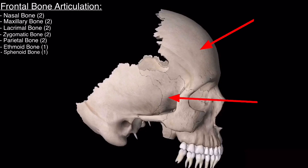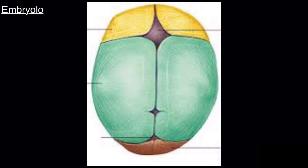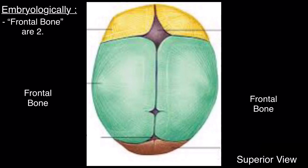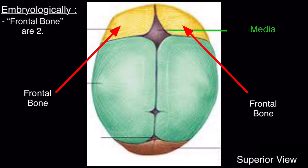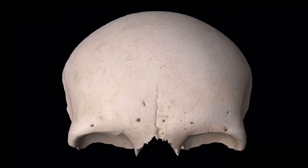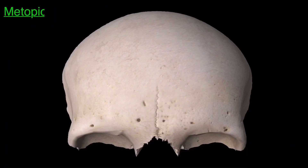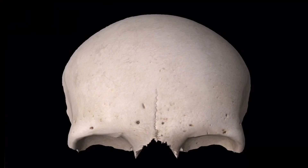Embryologically, the frontal bones are two in number, separated by the median frontal suture. The remnant of the median frontal suture is seen in adults at the region of the glabella as the metopic suture. That's all about the frontal bone, thank you.